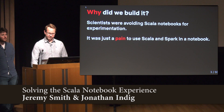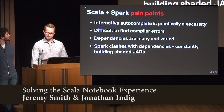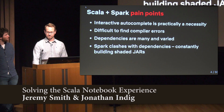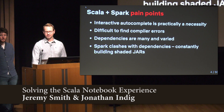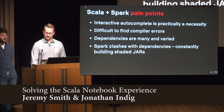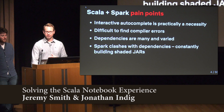The reason they were avoiding it is because it was just a pain to use Scala and Spark in a notebook, so researchers would go back to Python or avoid notebooks altogether. Some pain points our team had: autocomplete is really a necessity when working with Scala. Compiler errors can be difficult to find when all it tells you is a line number that doesn't always correspond to the actual location of the error. And there are a lot more dependencies with Scala projects — sometimes dozens of transitive dependencies — which can clash with Spark's own dependencies.